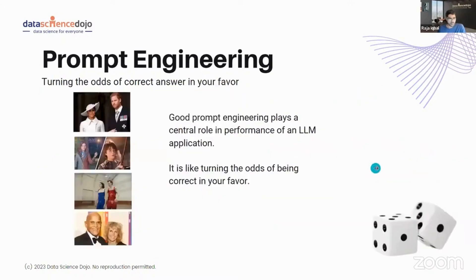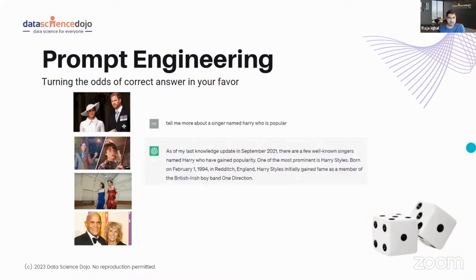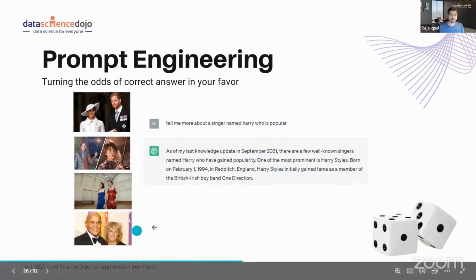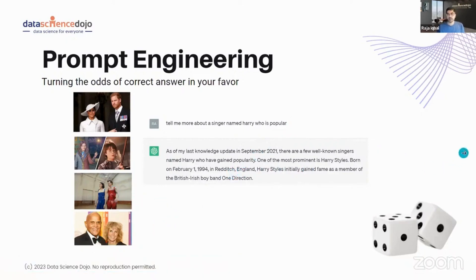It's almost like you are turning the odds of a correct answer in your favor — that's what prompt engineering is about. I came up with this example and then went to ChatGPT. I asked it: 'Tell me more about a singer named Harry who is popular,' and it gave me the name Harry Styles.